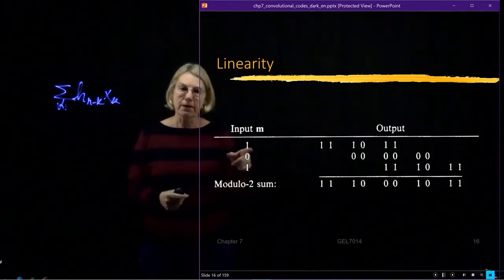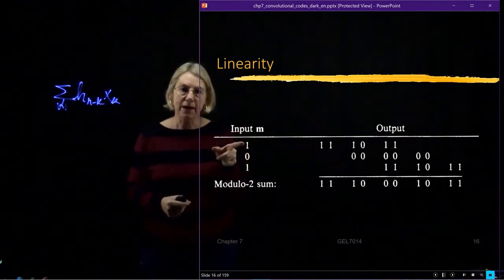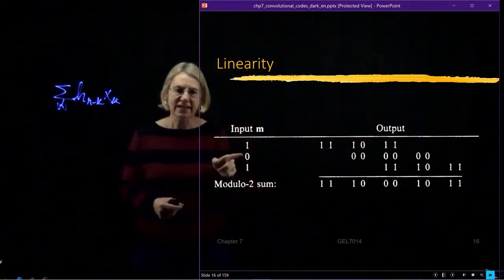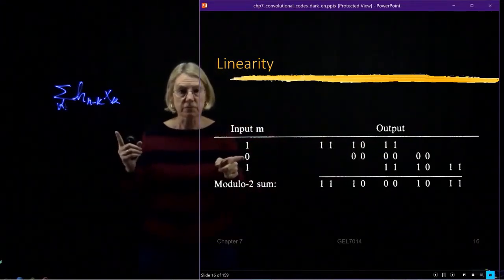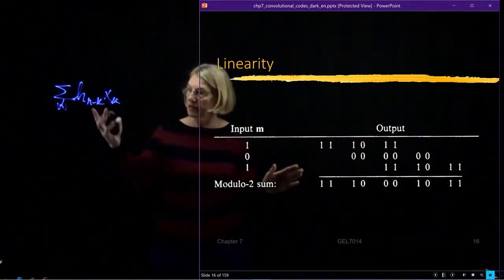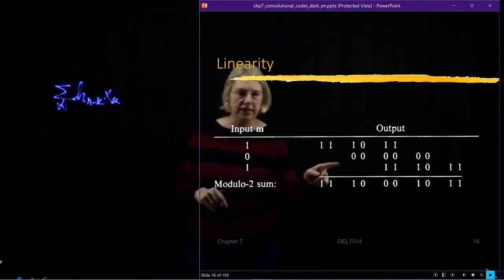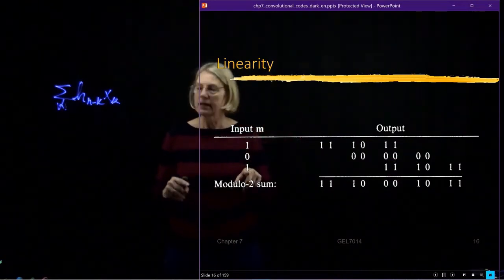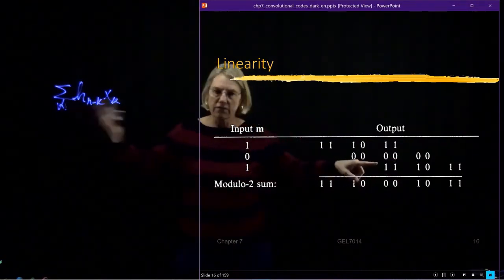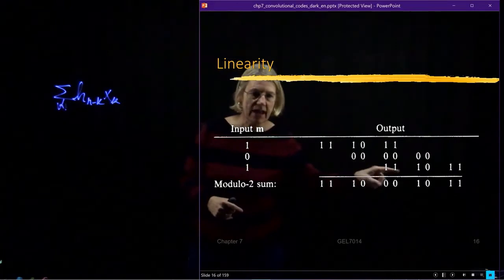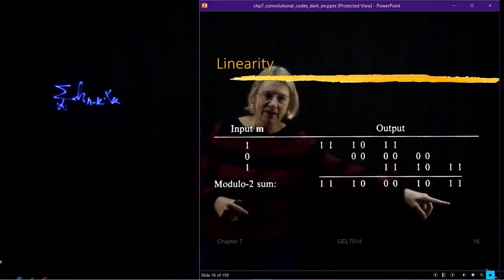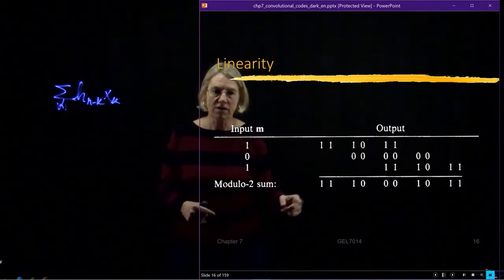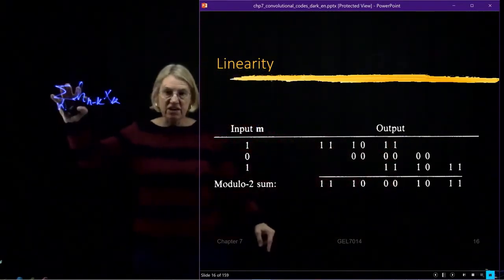So I take the impulse response and I multiply it by one. So then I get one, one, one, zero, one, one. Then I take the next one, zero, times the impulse response and I'm shifting it because I'm doing this summation over k. Now I'm over here but of course when I multiply I get zero. Then I get one and now I'm multiplying it and I've shifted over, my k equals three now. And so I have one, one, zero, one, one. And I do the summation modulo two of these, this summation here.